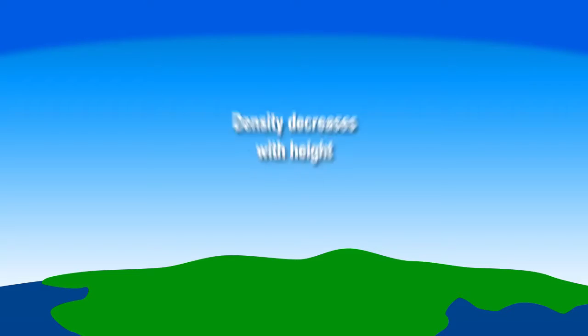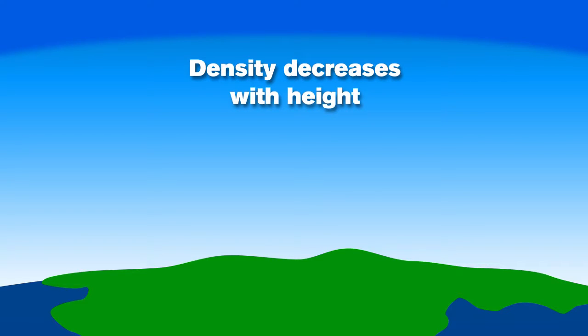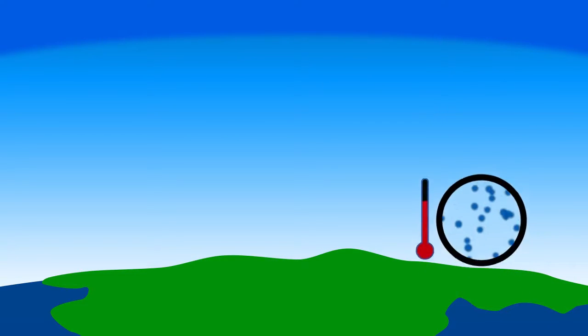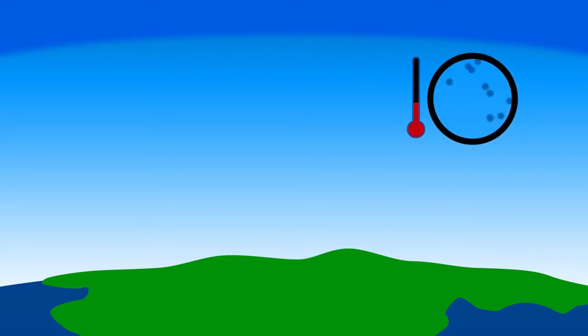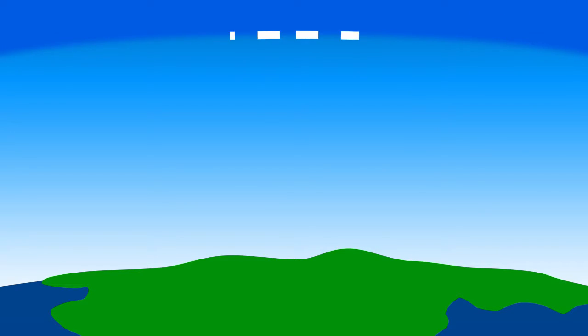In the troposphere, density decreases with height, meaning as you go up in altitude, the temperature decreases and the air becomes thinner. Just to give you an idea of the temperature change, by the time you reach the top of the troposphere or tropopause, the temperature will decrease to about minus 60 degrees Fahrenheit or minus 51 degrees Celsius.